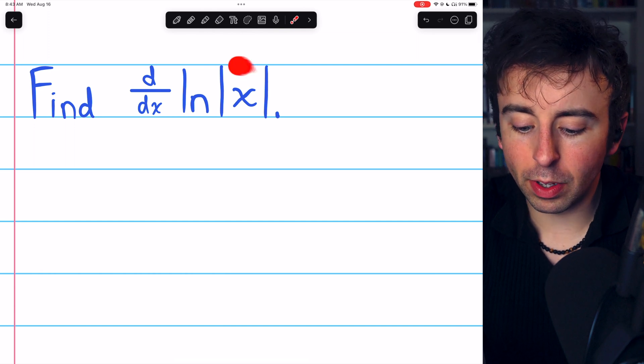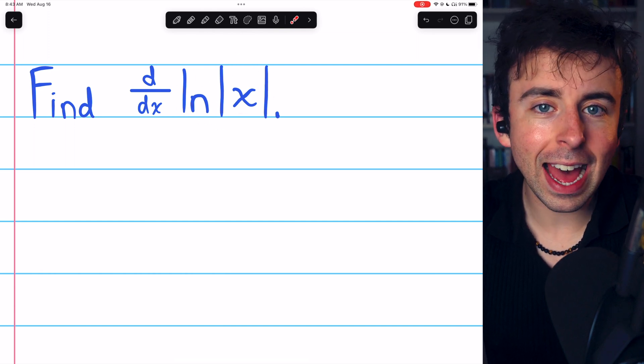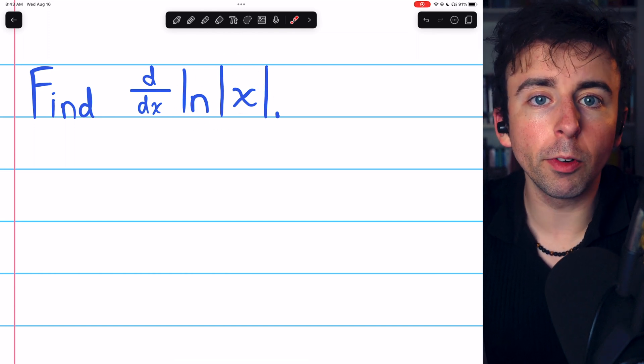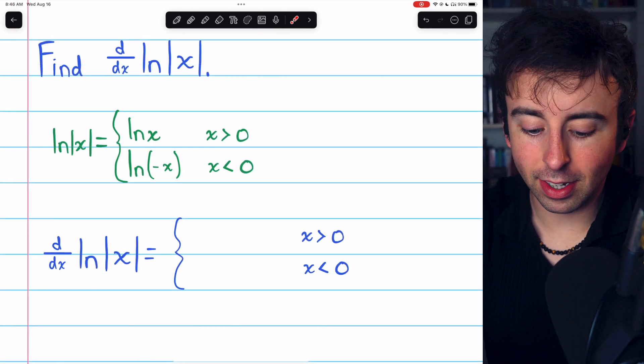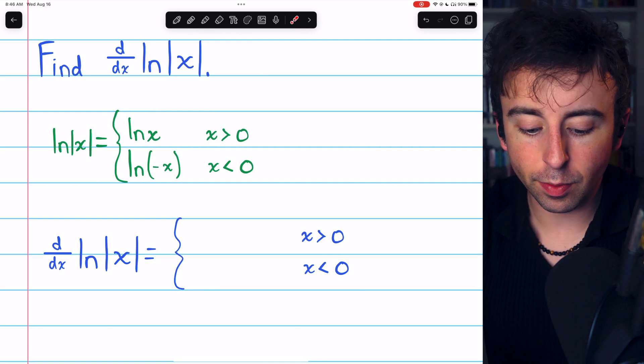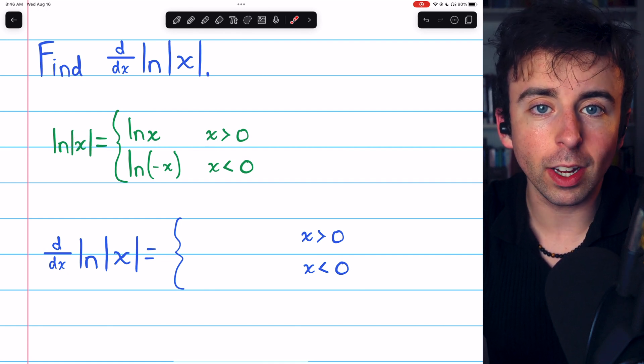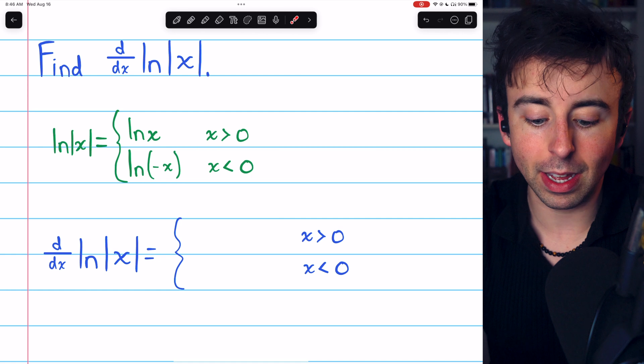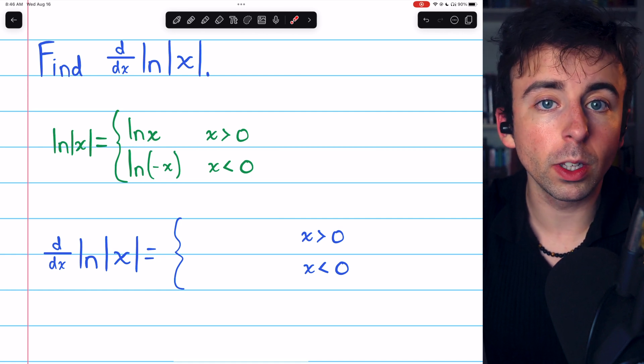So to take the derivative of the natural log of |x|, let's think about the two different ways this function behaves. We can express it in a piecewise manner like so. If x is positive, the absolute value will not change it, and so the natural log of the absolute value of x will just be the natural log of x.